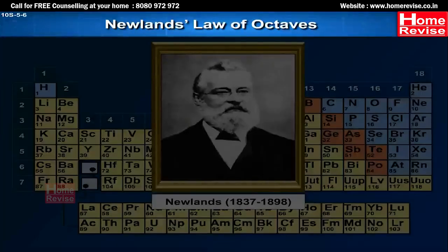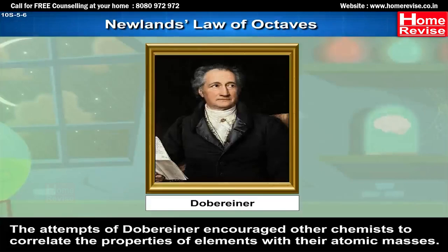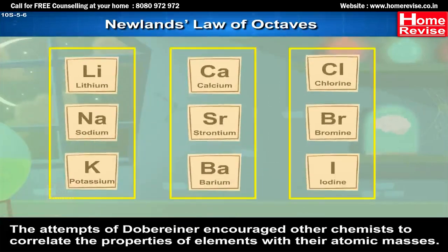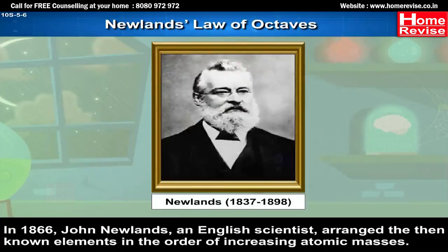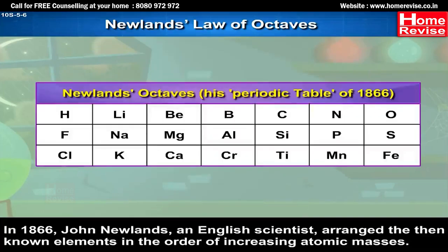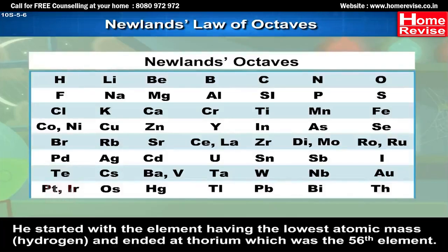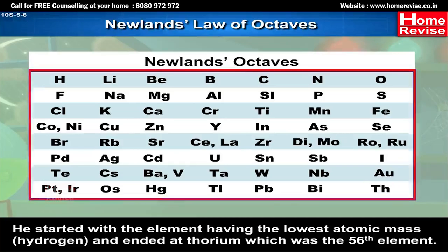The attempts of Dobereiner encouraged other chemists to correlate the properties of elements with their atomic masses. In 1866, John Newlands, an English scientist, arranged the then-known elements in the order of increasing atomic masses. He started with the element having the lowest atomic mass, i.e. hydrogen, and ended at thorium, which was the 56th element.